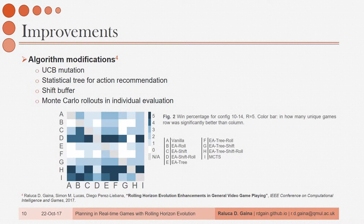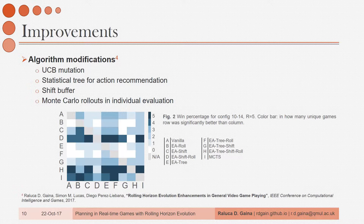It was clear that the evolution process needed some improvements. So we looked at four different parts in the algorithm and used methods from literature to see if they work in this domain and if they work together. The UCB-based mutation failed in this case, as the bandit system we used did not account for the connection between actions in the sequence and how their meaning would change once one action was changed. The best method that came out of this study was using a shift buffer to keep the population evolved during one tick and continue evolution from that point in the next one, while adding Monte Carlo rollouts at the end of the individual when evaluating it, in order to dynamically increase its length.